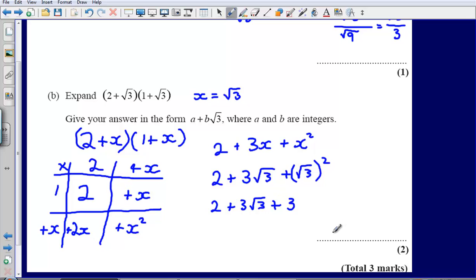So simplifying this, I've got 2 plus 3, that gives me 5, plus 3 root 3, and that would be my final answer.